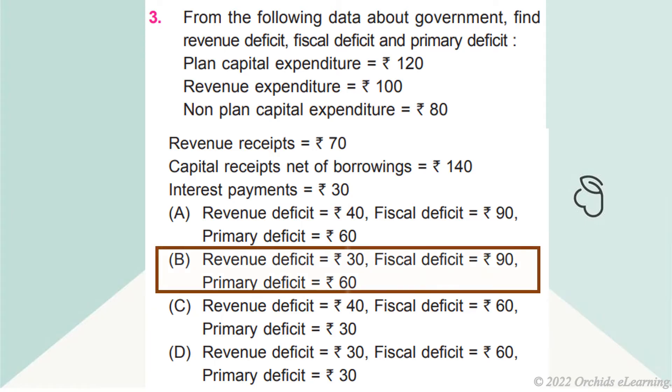Answer b: Revenue deficit equals Rs. 30. Fiscal deficit equals Rs. 90. Primary deficit equals Rs. 60.